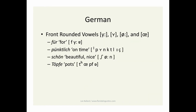Now on to German. Earlier we talked about rounded vowels like U and O. In English, all rounded vowels are back vowels and vice versa. In German, there are also front rounded vowels. There are four of them, as in the words 'für,' 'pünktlich,' 'schön,' and 'tüpfe.' Front rounded vowels in German are spelled with two dots. There's a lot of confusion about this — some Americans think that these are diphthongs. They are not. Although we'll see later there can be one, there is not necessarily any other vowel that mixes in.